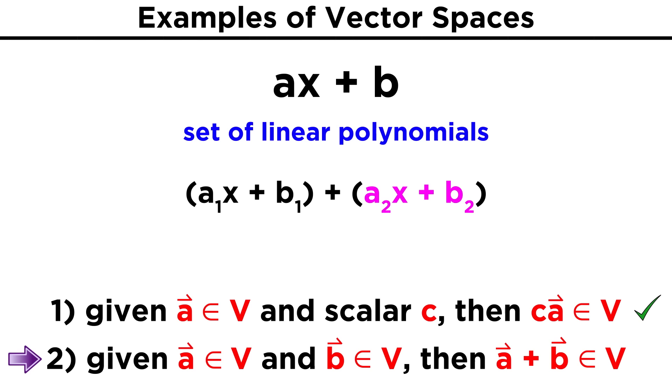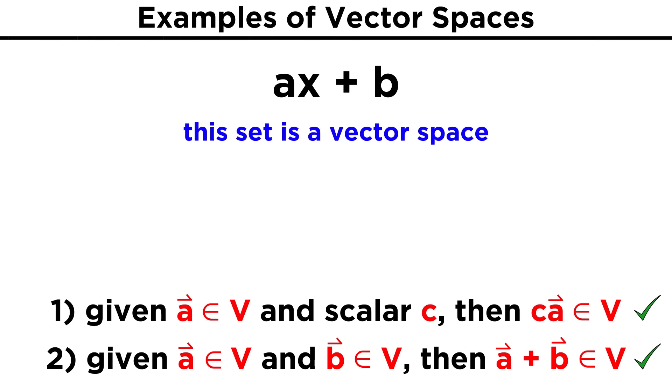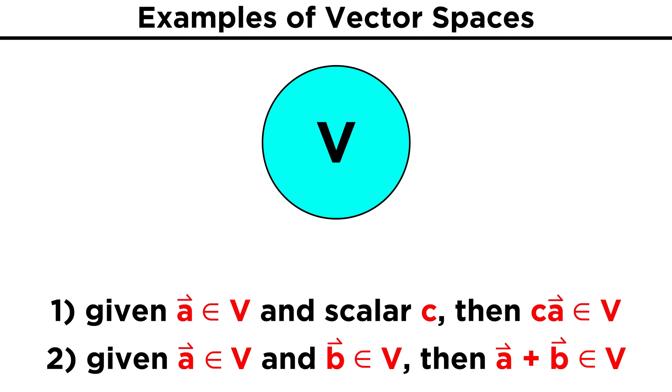Similarly, if we have two different equations, a₁ times x plus b₁, and a₂ times x plus b₂, and we add them, once we group like terms, we get the quantity a₁ plus a₂ times x, plus the quantity b₁ plus b₂. Once again, all of these are real numbers, and we get another linear polynomial that is contained in our set. With these two closure properties satisfied, we therefore have a vector space made of functions.